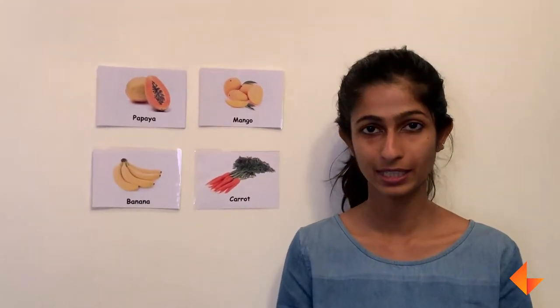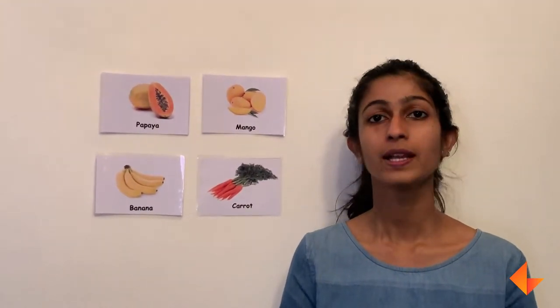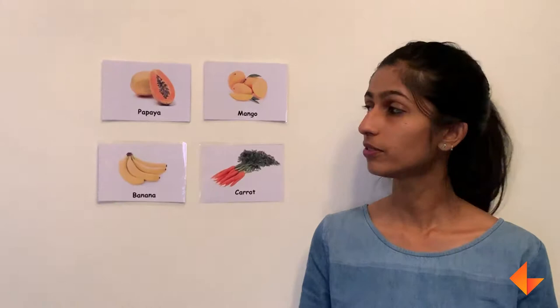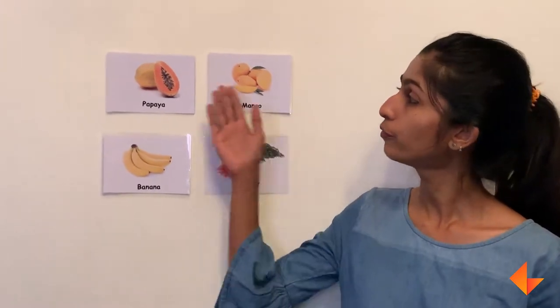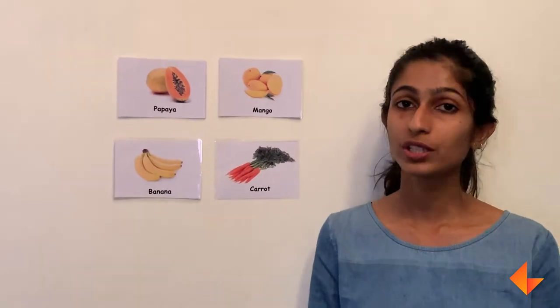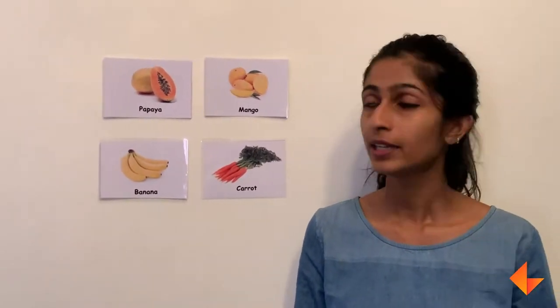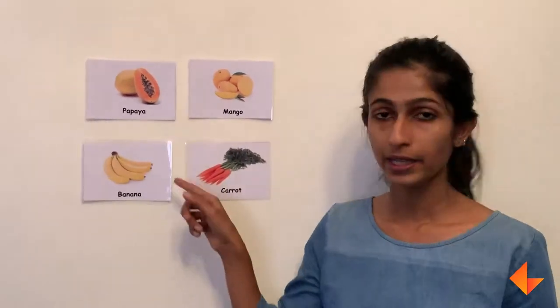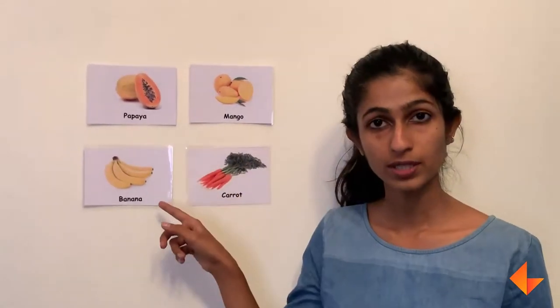Today I am going to show you how to do a listening and speaking activity called Compare. The teacher will have to put up four flashcards on the board and describe any one picture. The children have to listen very carefully, compare the images, and tell the teacher which one she is talking about.